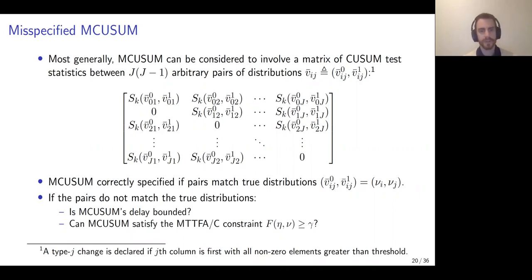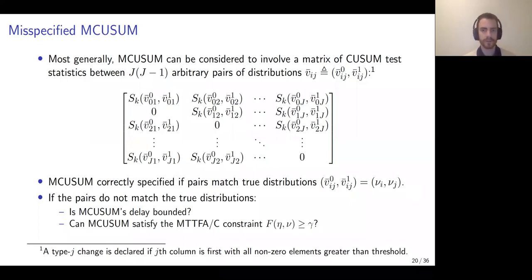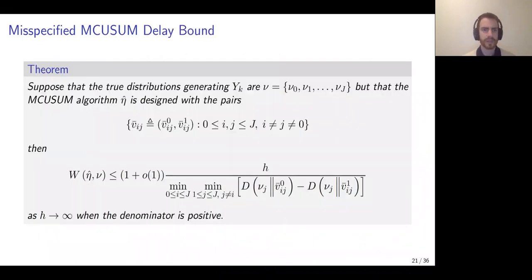If we have a potentially horrendously misspecified MQSUM algorithm, some obvious questions arise: is the MQSUM delay bounded, and can MQSUM still satisfy its mean time to false alarm and false isolation constraint if we're not using the true distributions — or even matching distributions across different columns?